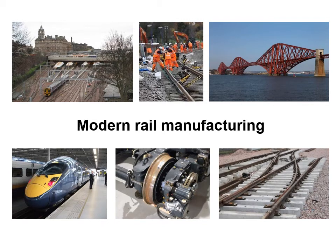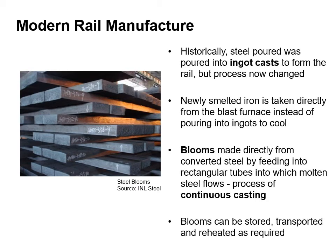We're now going to look at some of the modern methods used for manufacturing rails. Historically, steel was poured into ingot casts to form the rail, but the process has now changed. Newly smelted iron is taken directly from the blast furnace instead of being poured into ingots to cool. Blooms are made directly from converted steel by feeding into rectangular tubes into which molten steel flows — this is the process of continuous casting. Blooms can be stored, transported and reheated as required.